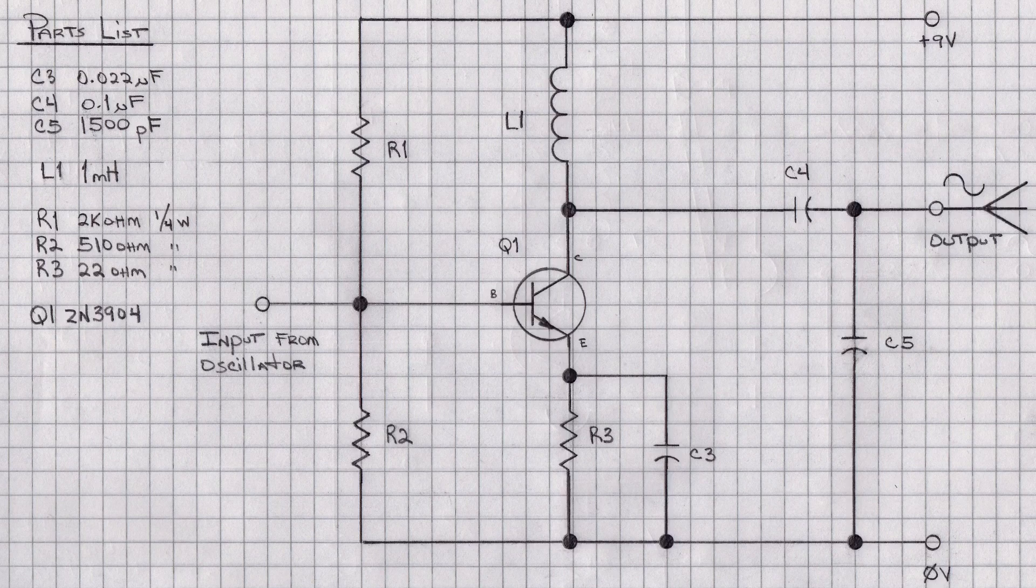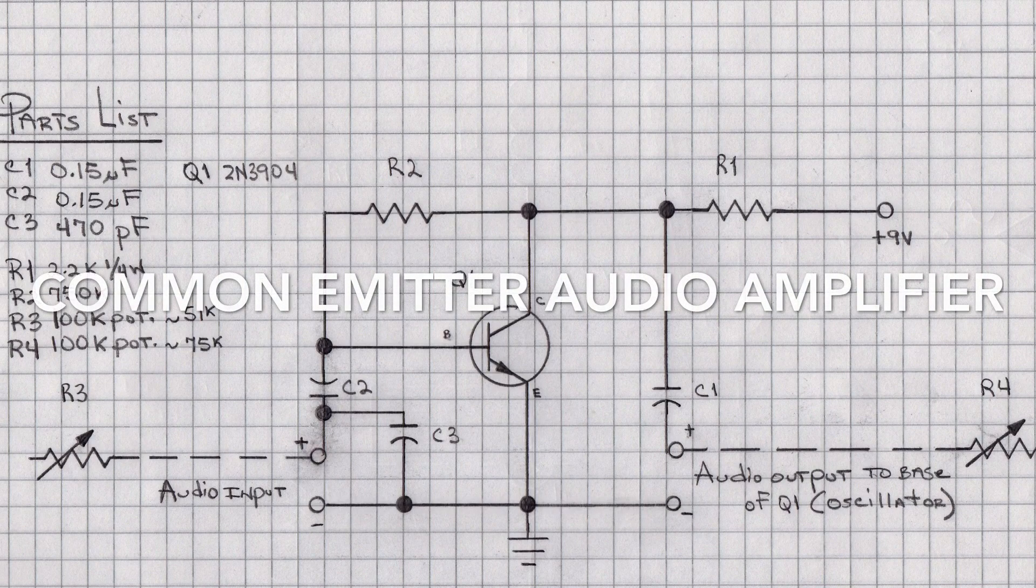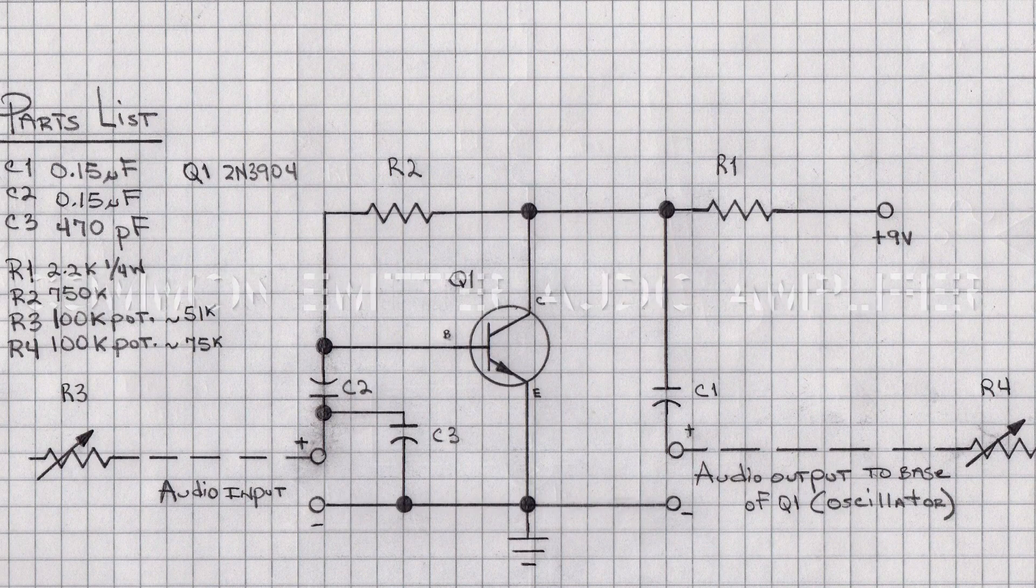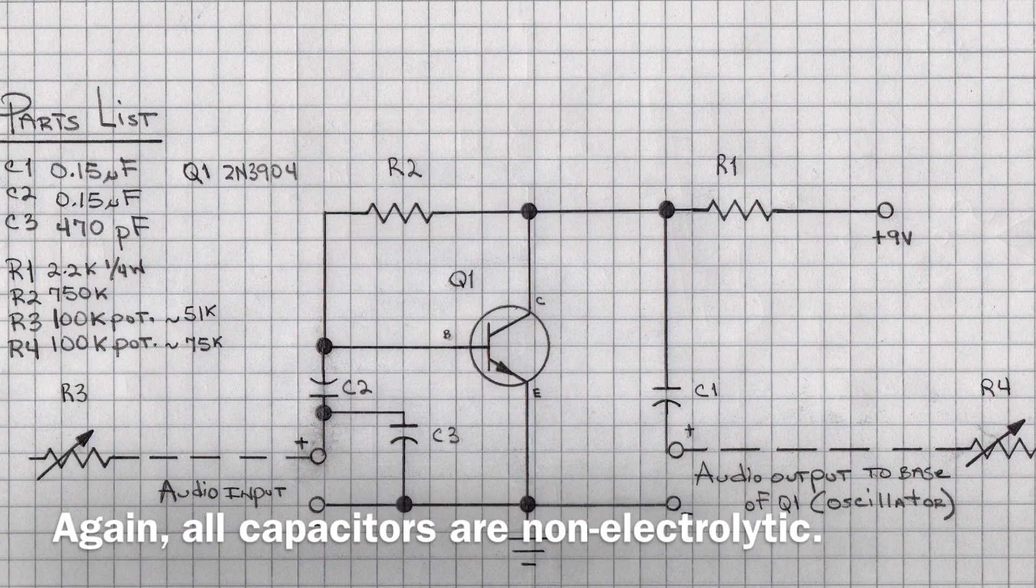Now let's take a look at the audio amplifier as well. To keep things consistent, again, I'm using a common emitter audio amplifier here. And the choice, as I noted earlier, another 2N3904 transistor.